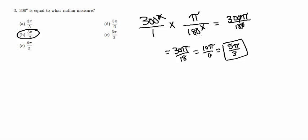One other thing I wanted to talk about is conceptually why this works. So why can you take 300 degrees and multiply it by pi over 180 to get your answer? You can do that because this, since 180 degrees is equal to pi, that is essentially just equal to 1.